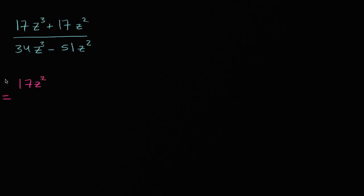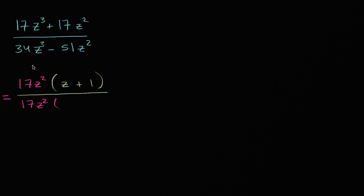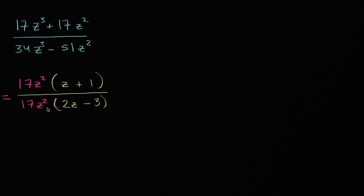So 17z² can be factored out of the numerator. Factoring 17z² out of 17z³ leaves just z, and factoring 17z² out of 17z² leaves just one. You can verify: 17z² times z is 17z³, and 17z² times one is 17z². For the denominator, we factor out 17z² as well. 34z³ divided by 17z² gives 2z, and then minus 51z² divided by 17z² gives minus three. So we divide the numerator and denominator by 17z².